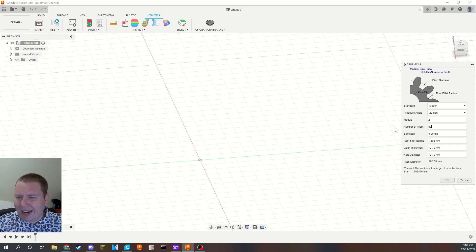Maybe we'll do 90 teeth. Fill it. I'm not going to change any of this stuff. Gear thickness, maybe three, and we're going to do no hole.